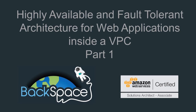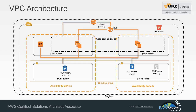Welcome to the Backspace Academy lab on creating a highly available and fault-tolerant architecture for web applications inside a VPC. This lab will be the culmination of many aspects that you've learned throughout the course. The focus will be on making sure that you fully understand all of the concepts essential for certification. The architecture we'll be developing will be typical of what you'd expect from a WordPress application or an e-commerce site like Magento.